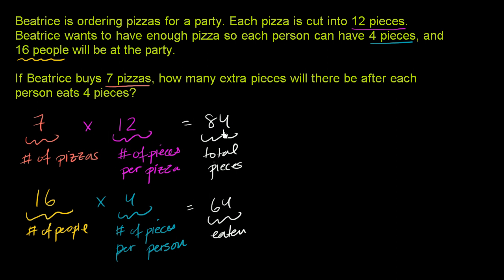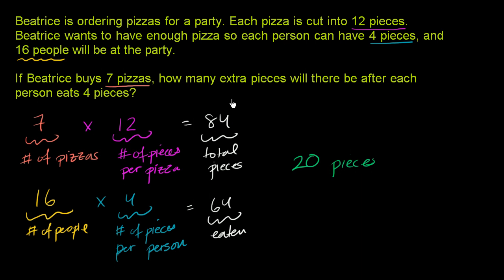So how much does she have left over? Well, if you start with 84 pieces and 64 get eaten, 84 minus 64 is 20. So — we deserve a drum roll now — you have 20 extra pieces after everyone eats their share.